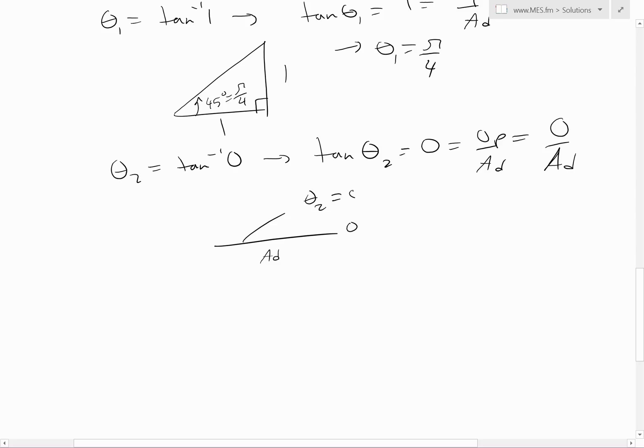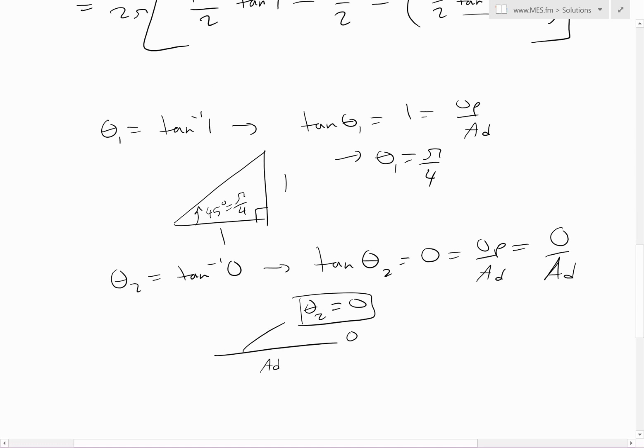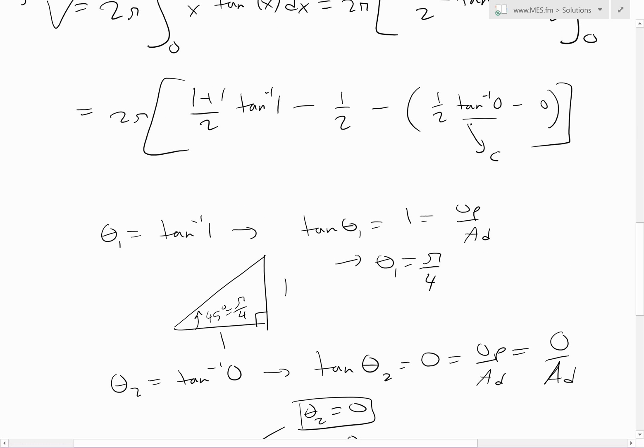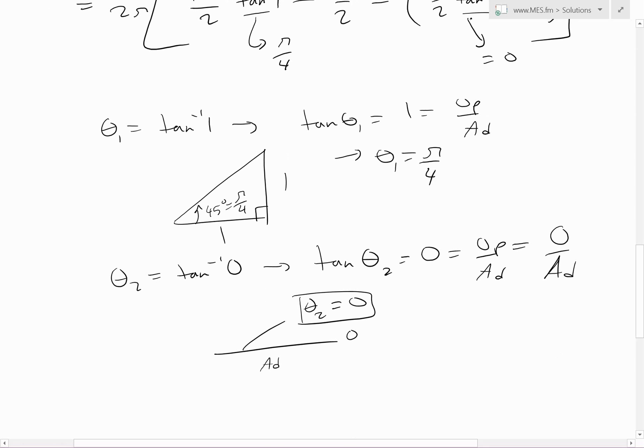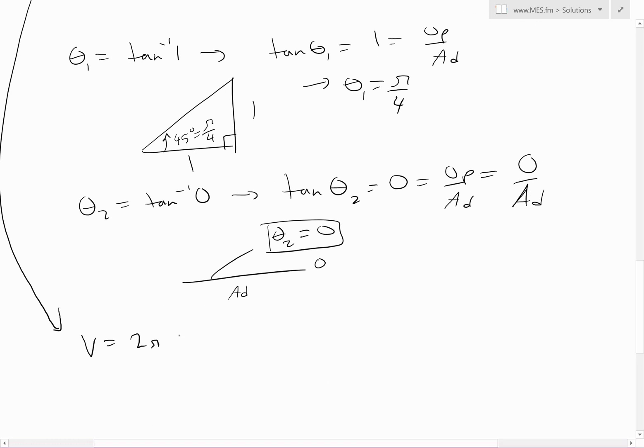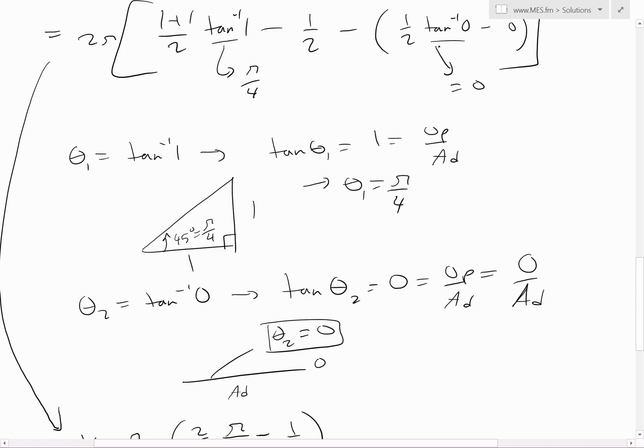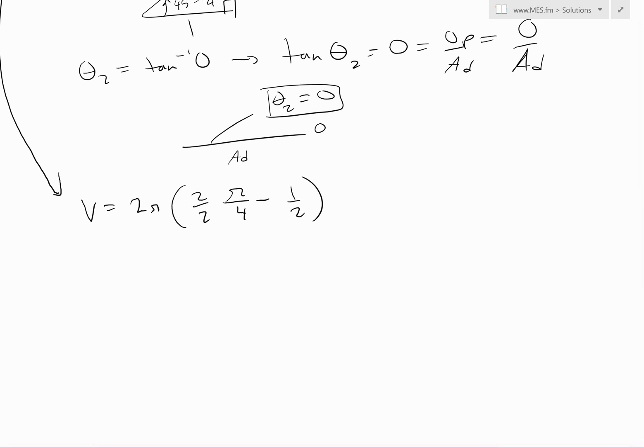This equals 0, so this goes to 0. This part equals π/4. Now we plug these inside: v equals 2π times [2/2 × π/4 - 1/2] and these cancel as 0. This cancels, we're left with 2π²/4 - 2π/2.